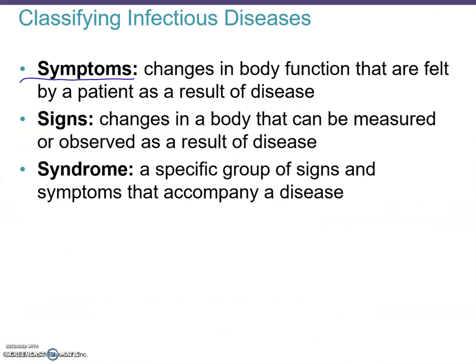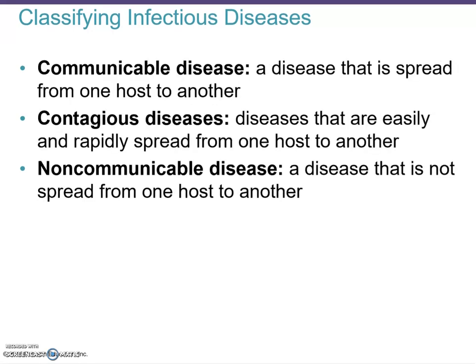When classifying infectious diseases, we use several terms. A symptom is a change in body function felt by the patient — examples include sneezing, itchy watery eyes, nausea, and diarrhea. A sign is a change in the body that can be measured or observed — for example, fever. A syndrome is a collection of symptoms surrounding a disease; HIV causing AIDS — Acquired Immunodeficiency Syndrome — is a classic example, as AIDS involves a collection of multiple symptoms.